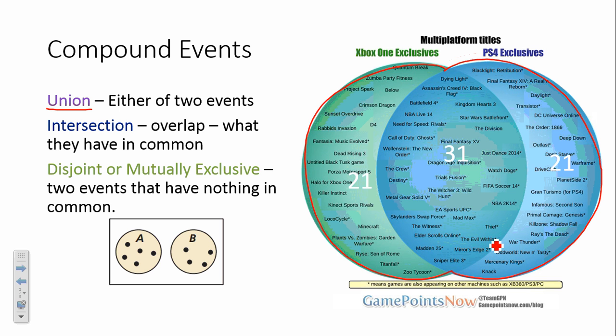Intersection, in probability speak, is the overlap, what they have in common. So, if we're talking about the intersection of these two, we're talking about, what do they have in common? Where do those two Venn diagrams overlap?